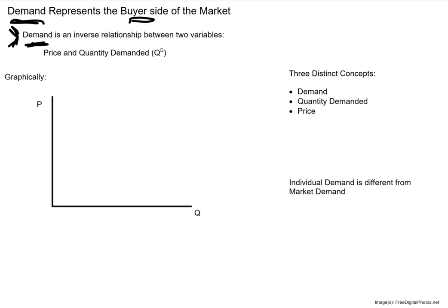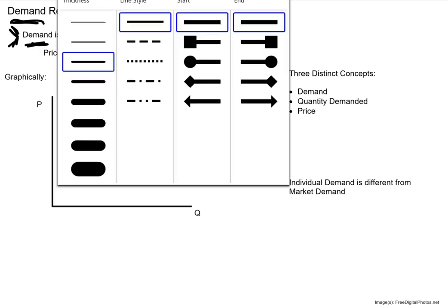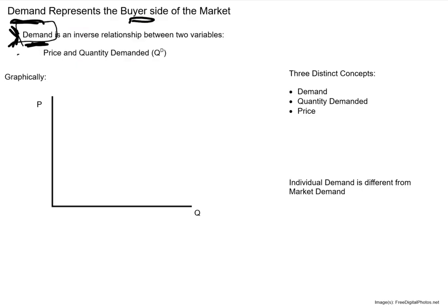We've got this definition of the word demand. In this class we're going to use the term demand very, very carefully. I caution you that outside of this class, even in good sources like the Wall Street Journal, the New York Times, or Bloomberg News, sometimes they use the term demand a little bit loosely. But we're going to be very precise with our language here. What demand represents is fundamentally a relationship — it's describing a relationship between two different variables.